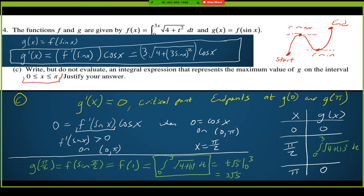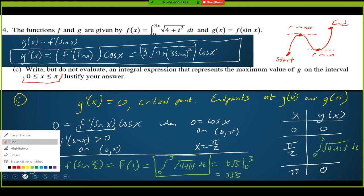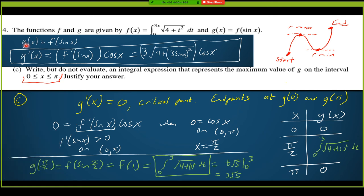So pi over 2 is our only critical point. I need to test it along with the start and end points. g of 0 equals f of sine 0, which is f of 0 — that's the integral from 0 to 0, which is 0. g of pi equals f of sine pi, which is also f of 0 — the integral from 0 to 0, again 0. So both the start point and end point give g values of 0.